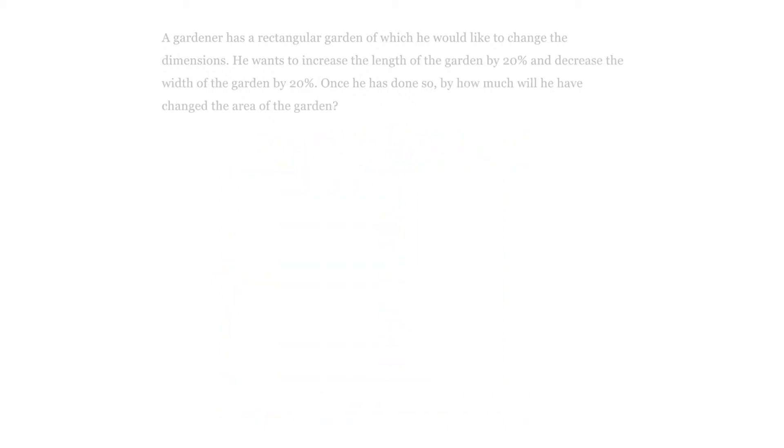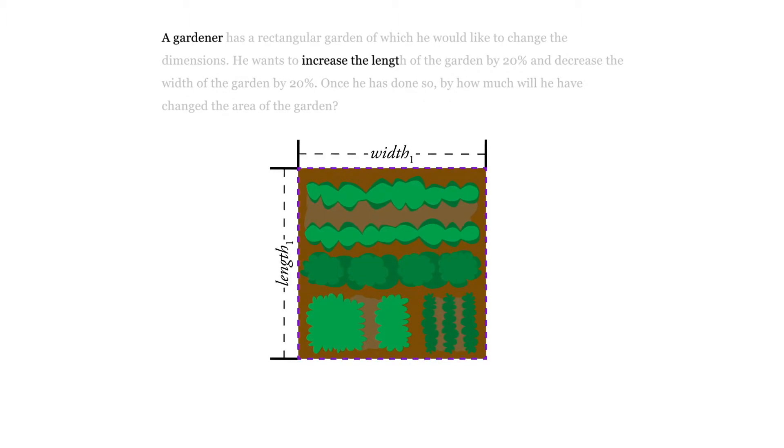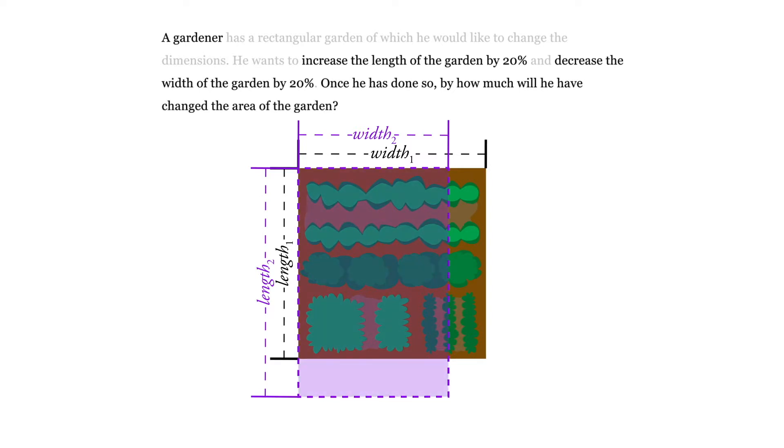So in this case, we have a gardener and he's going to increase the length of his garden by 20% and decrease the width of his garden by 20%. And once he's done so, we want to know how much has he changed the area of the garden. So he's kind of elongated it in one direction and shortened it in the other.